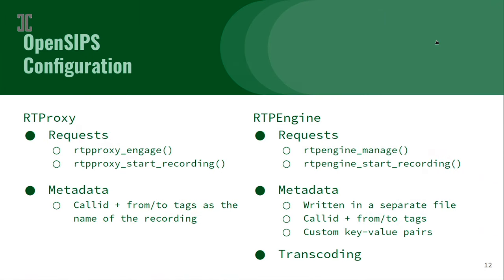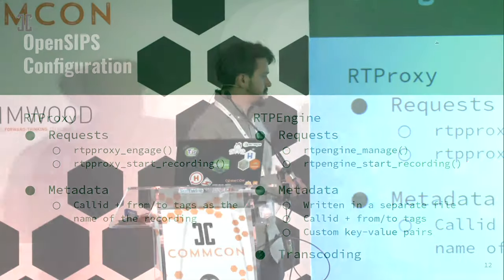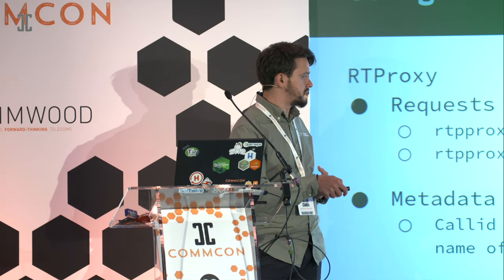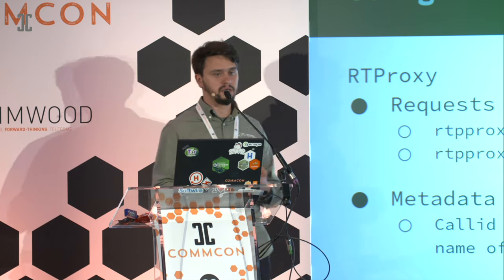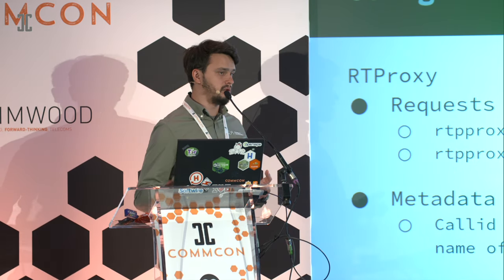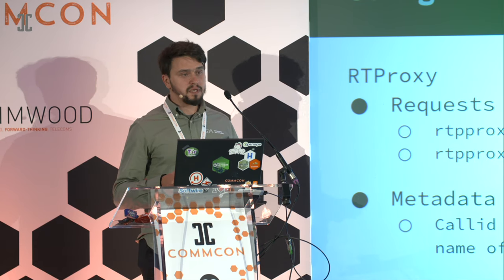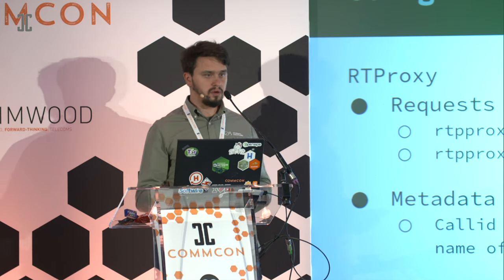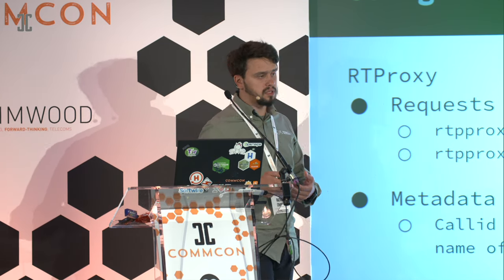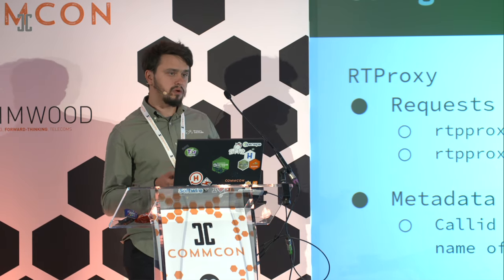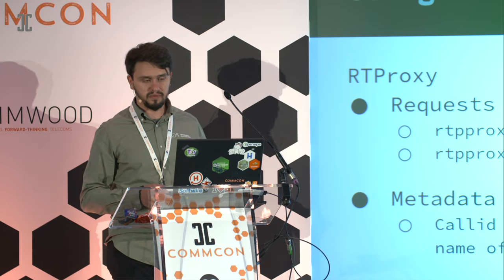In OpenSIPS configuration, it is very simple. All you have to do for both projects is engage the RTP proxy or RTP engine in the call. And whenever you want to start recording, just call the start-recording RTP proxy or RTP engine start-recording function. It will all happen on the RTP proxy and RTP engine servers. You can also annotate your recordings with metadata to correlate them back with CDRs or call flows.